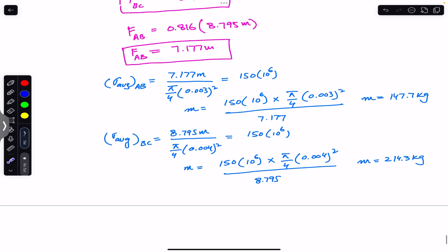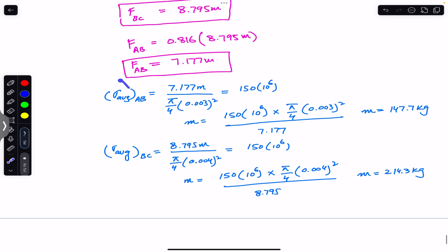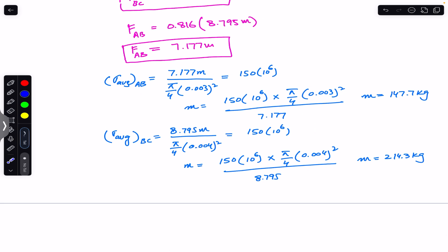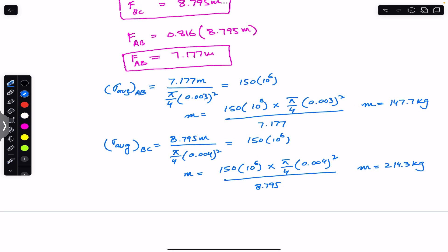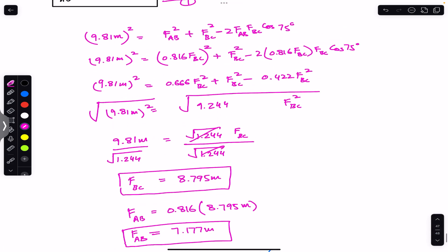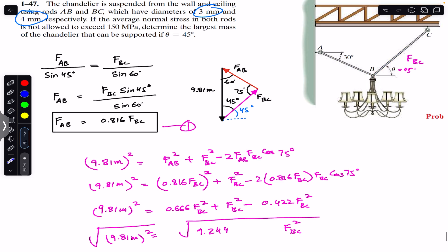As you can see, if the mass exceeds 147.7 kg, the average normal stress in rod AB will exceed 150 MPa — so rod AB is the controlling constraint. The mass of the chandelier must be equal to or less than 147.7 kg to keep the average normal stress in both rods within 150 MPa.